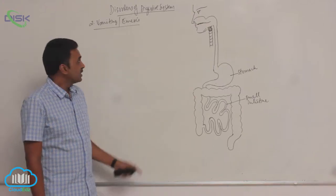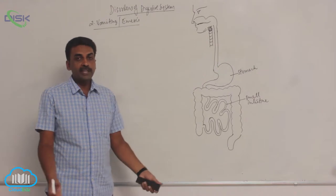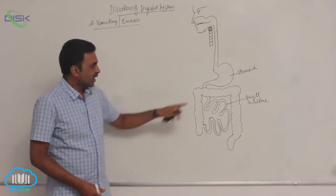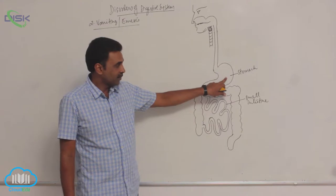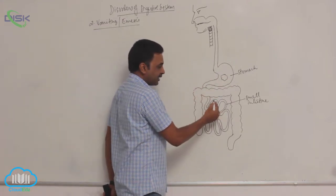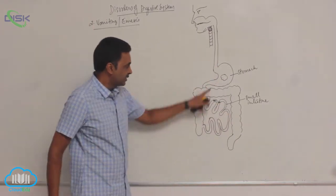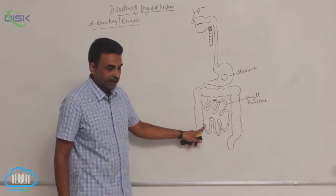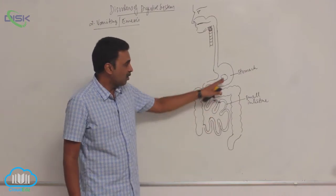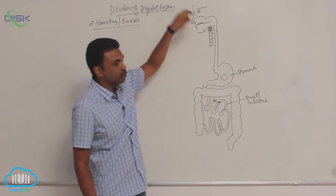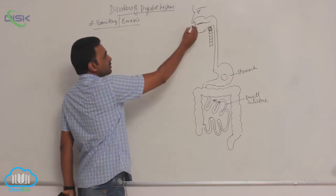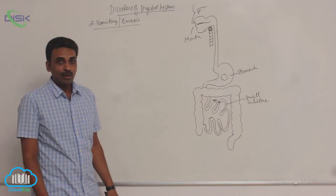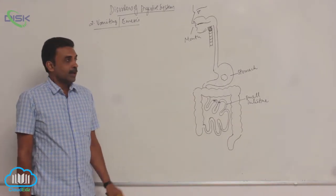The second digestive disorder is vomiting, also called emesis. During emesis, contents present inside the stomach and in the upper region of the small intestine — which includes the duodenum, jejunum, and ileum — are forcefully pushed outside through the mouth. This forceful expulsion through the mouth is called vomiting or emesis.